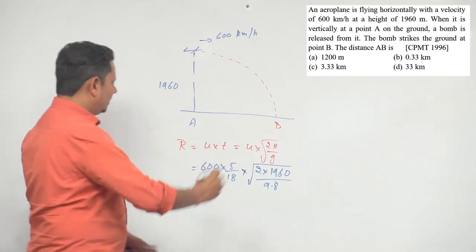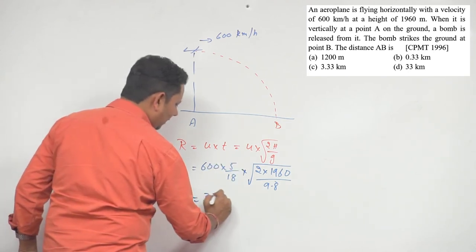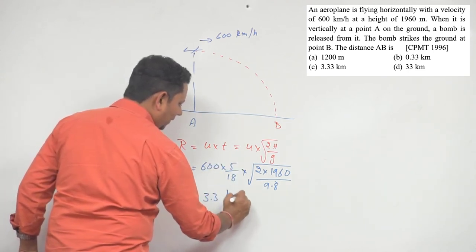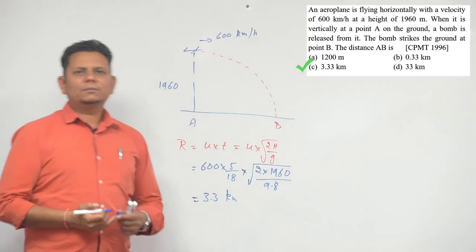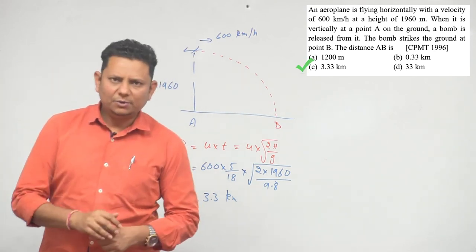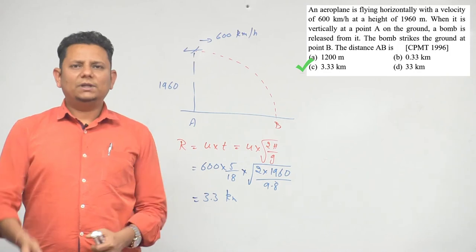That is the case. When we solve this, the value will come out to be 3.3 kilometers. So based on this we can say that option number C, 3.33 kilometers, would be the right answer.